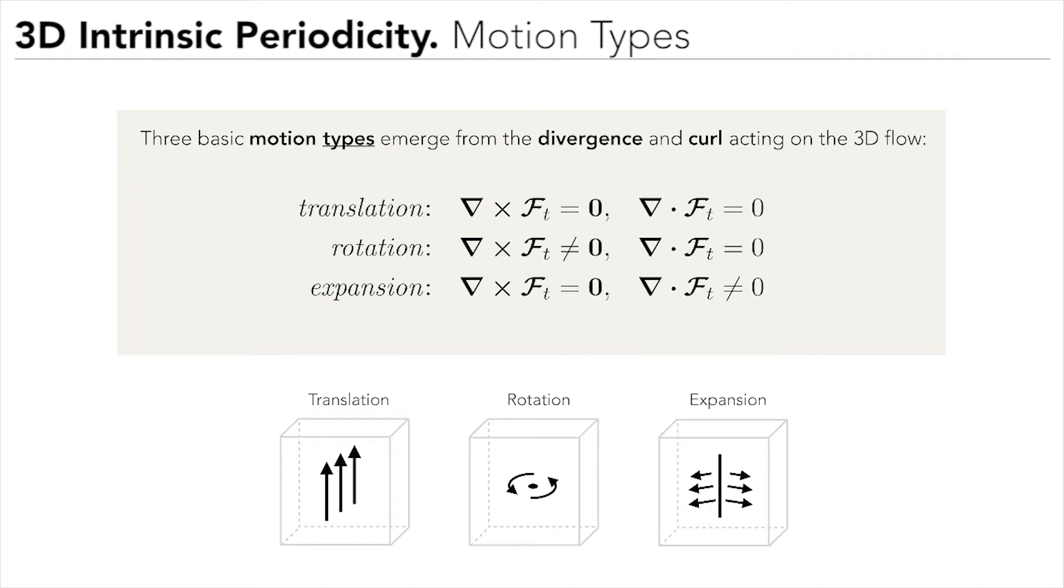Specifically, the spatial differential operators Divergence and Curl give rise to three periodic motion types: translation, rotation and expansion.